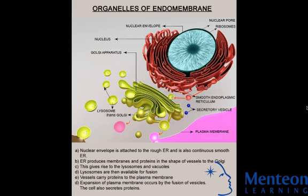A vesicle is a relatively small membrane-enclosed sac that stores or transports substances. The plasma membrane, also known as the cell membrane, is a protective barrier that regulates what enters and leaves the cell.